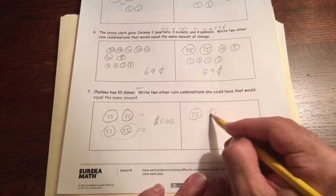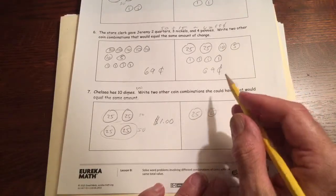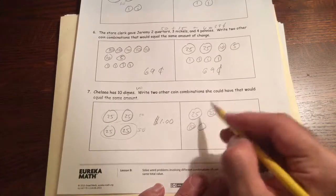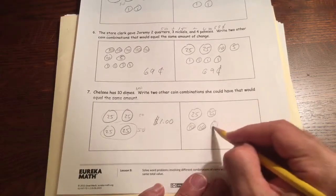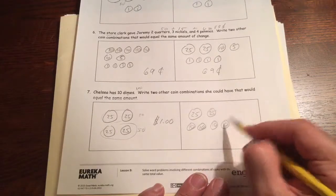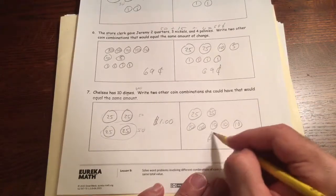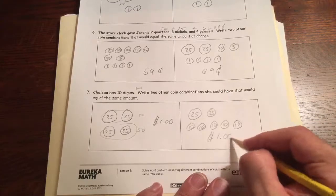Another way to come up with this besides ten dimes and four quarters is you could do two quarters. That's 50 cents. Two twenty-fives is 50. And then you could draw five dimes. Ten. Sixty. Seventy. Eighty. Ninety. There's a hundred cents which is a dollar. A dollar and zero cents.